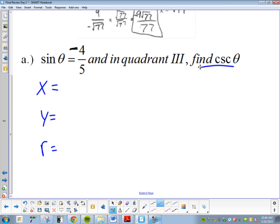So what's my y and what's my r? y is negative four, r is five. r is never negative, so I know the negative goes with the y. I've got y and r. What other thing do I need? X.